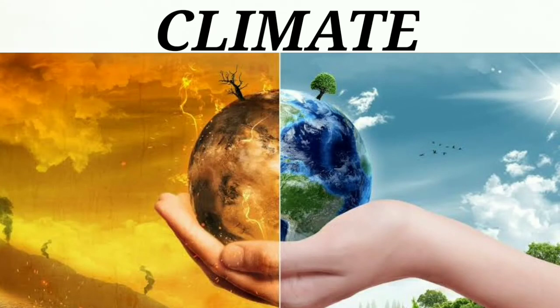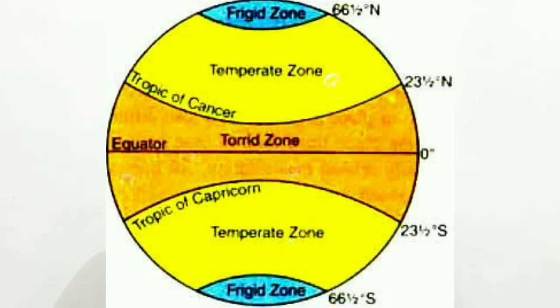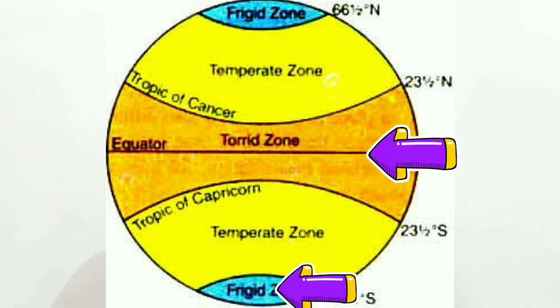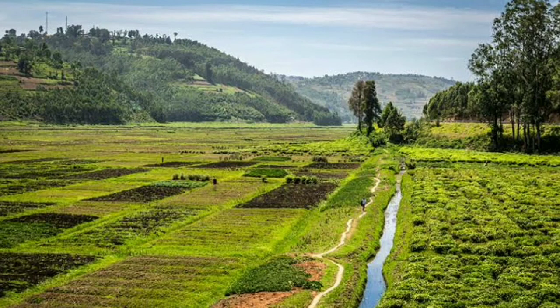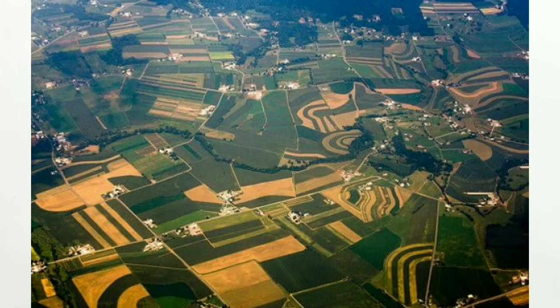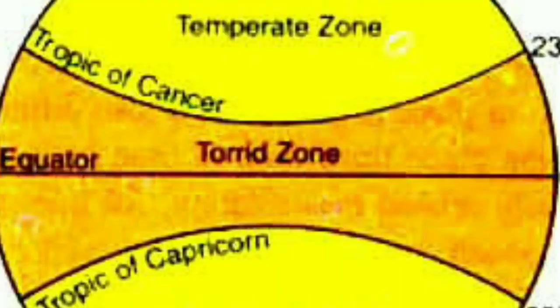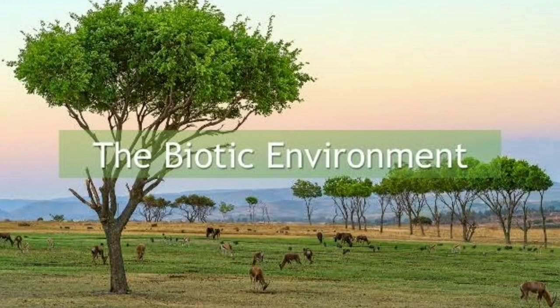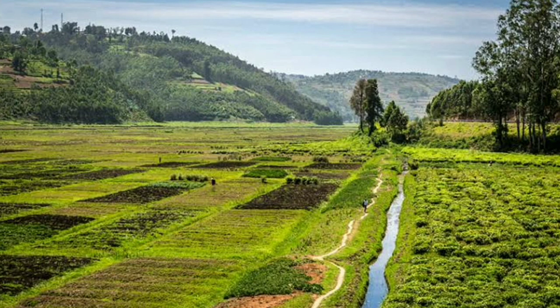Climate plays a very important role in the land use pattern. Our earth is divided into three heat zones. The equatorial regions and polar regions, which are either extremely hot or extremely cold, make it very difficult to use the land for pastures or cropland. The zones having moderate climate support the land use pattern and the growth of crops. In regions with extreme climate, only tiny grasses and shrubs grow.